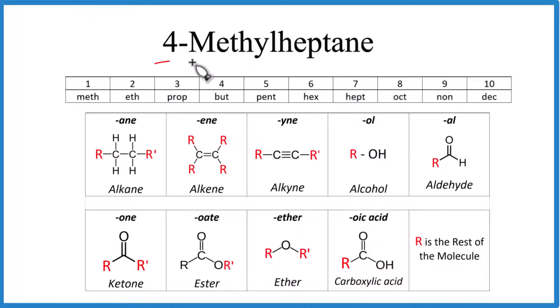Let's draw the structure for 4-methylheptane. Here's how we do that. For 4-methylheptane, it ends in -ane, which means it's going to be an alkane. It's going to be carbon atoms in a chain, all with single bonds. Carbons and hydrogens, all single bonded. Hept means seven.